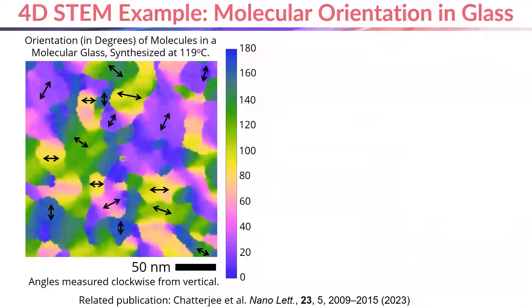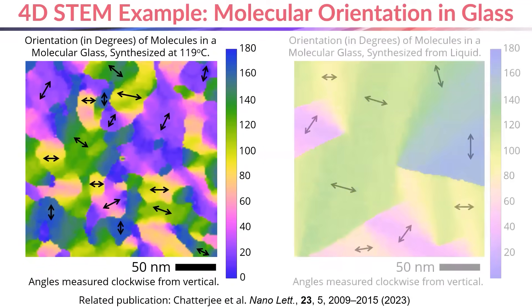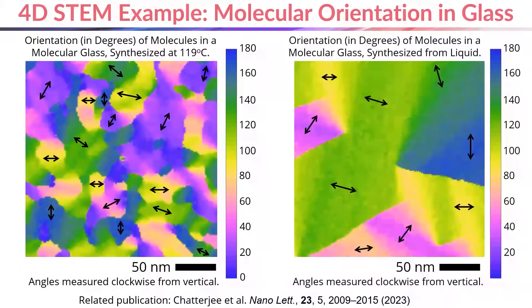We can use the 4D STEM data to generate maps of the material, which tells us about the size of ordered domains in the glass, and we can also compare ordering in molecular glasses that were synthesized under different conditions and start to learn about the different properties that that gives these materials.